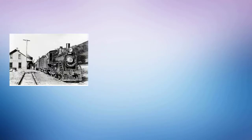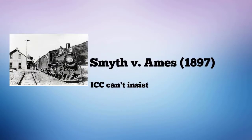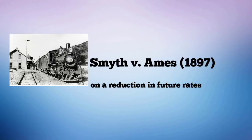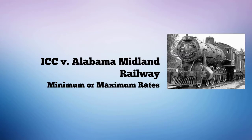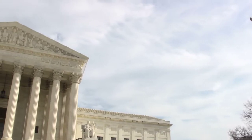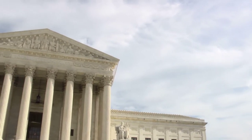For example, the court decided that while the ICC could decide whether existing rates were legal, it could not insist on a reduction in future rates. It also decided that the ICC did not have the authority to prescribe minimum or maximum rates. By 1906, the court had decided 16 cases involving the railroads and the Interstate Commerce Act, ruling in favor of the railroads in 15 out of the 16 cases.